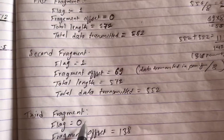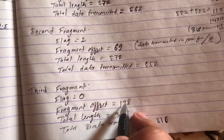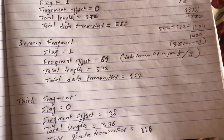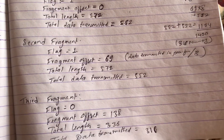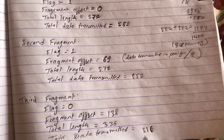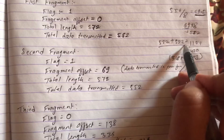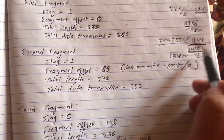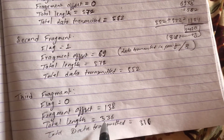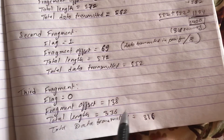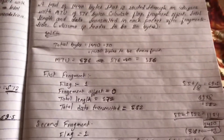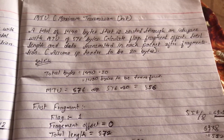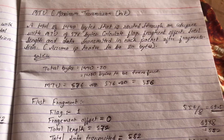For the third fragment, the flag is 0 because it's the last one. The fragment offset is 138, calculated by adding 552 and 552 and dividing by 8. The total length is 336 and the total data transmitted is 316 bytes — the remainder after subtracting 1104 from 1420 — with 20 added as the IP header to get the total length.